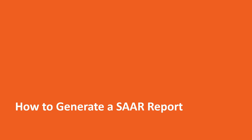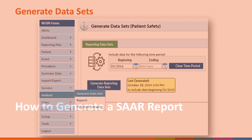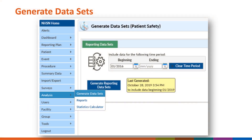First, let's go over how to generate a SAR report using the 2017 Baseline SAR. Prior to running any NHSN analysis report, we need to generate new datasets. After logging into NHSN, navigate to Analysis on the left-hand navigation bar and select Generate Datasets. On the Generate Datasets screen, click the Generate New button.